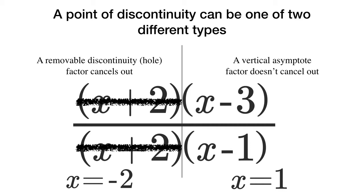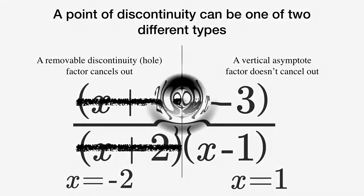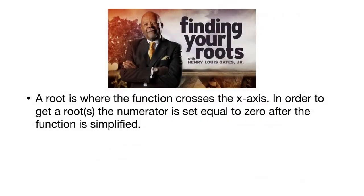But Mr. Peacock you may be asking, what about x minus 3? Well that's not a discontinuity. That's a root. And a root is where the function crosses the x axis. In order to get a root, the numerator is set to zero after the function is simplified.